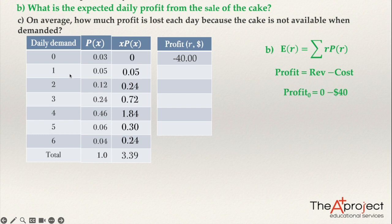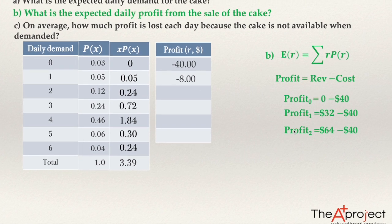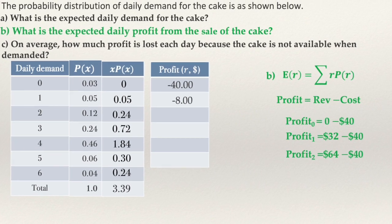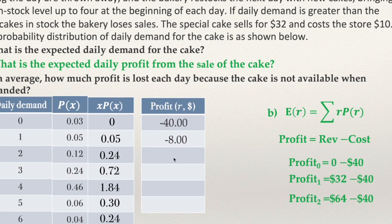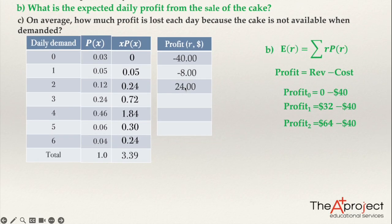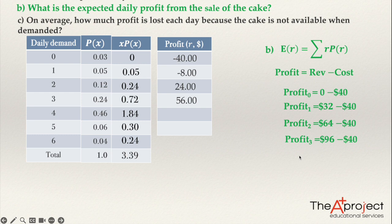Another possibility: if they sell one cake, the profit is $32 minus $40, so negative $8. If they sell two cakes, revenue is $64 (since each cake sells for $32), so $64 minus $40 gives a positive profit of $24. If they sell three cakes, that's $96 minus $40, giving $56. And if they sell all four cakes, that's $128 minus $40, giving $88.